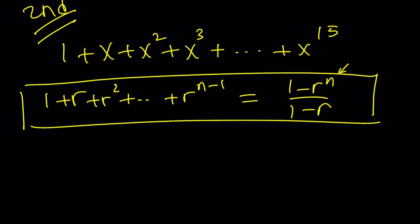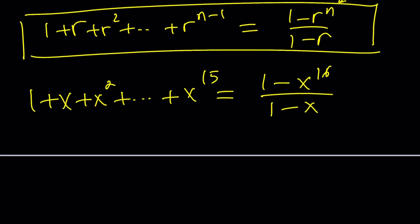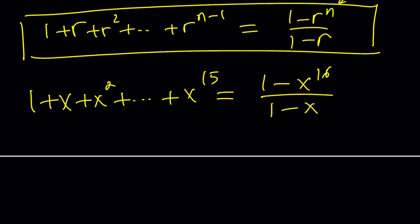r would be x. So 1 plus x plus x squared dot dot dot is going to be 1 minus x to the power 16 divided by 1 minus x. I thought you were trying to factor it. This is not factored. Wait a minute. We're not done yet. We're going to factor it. You know how? This is difference of two squares.